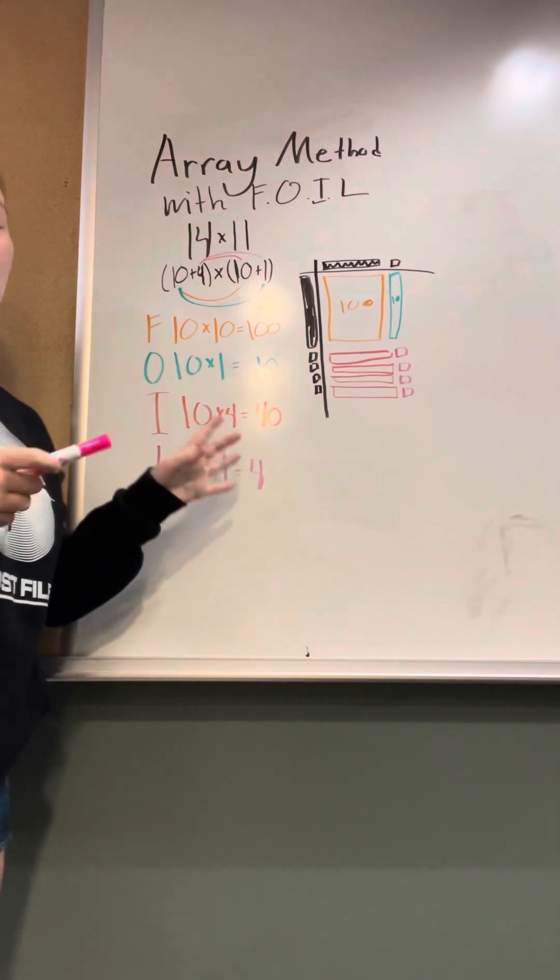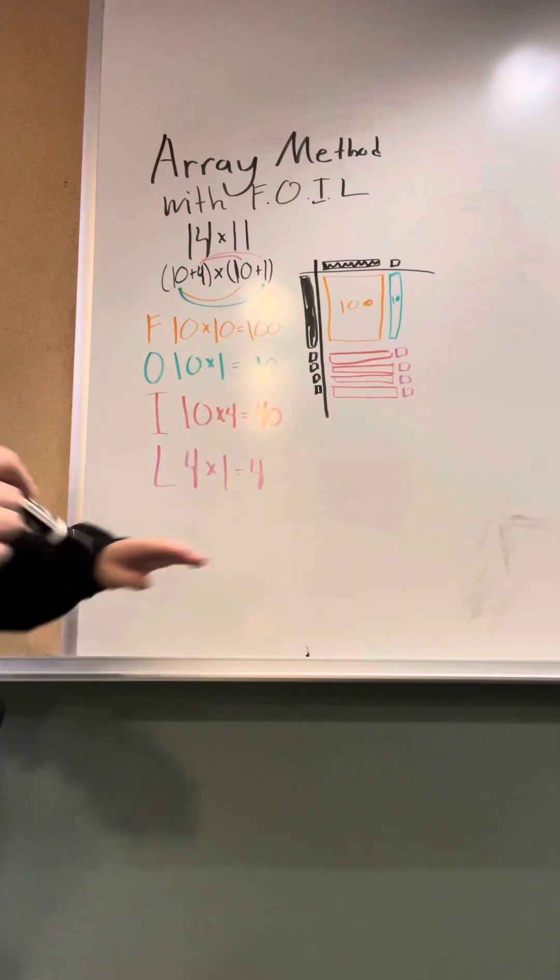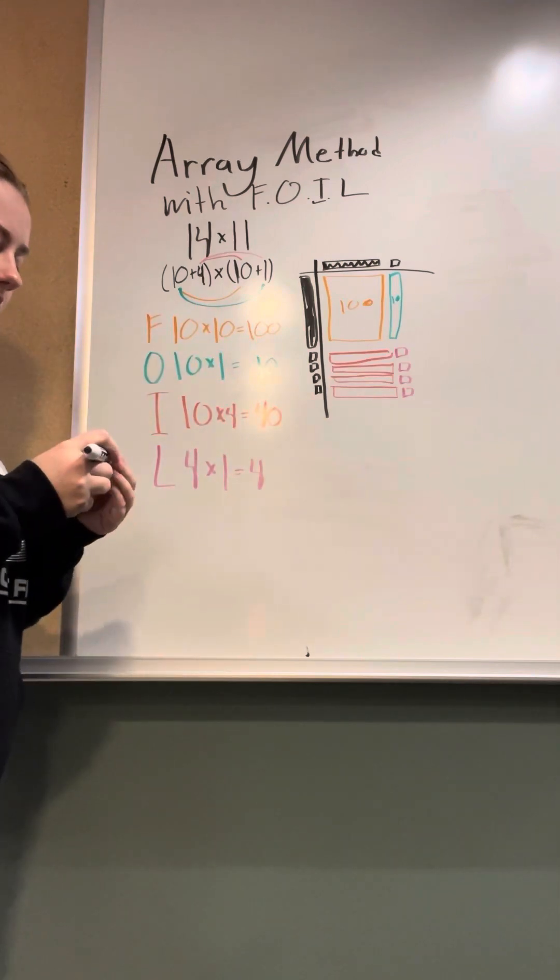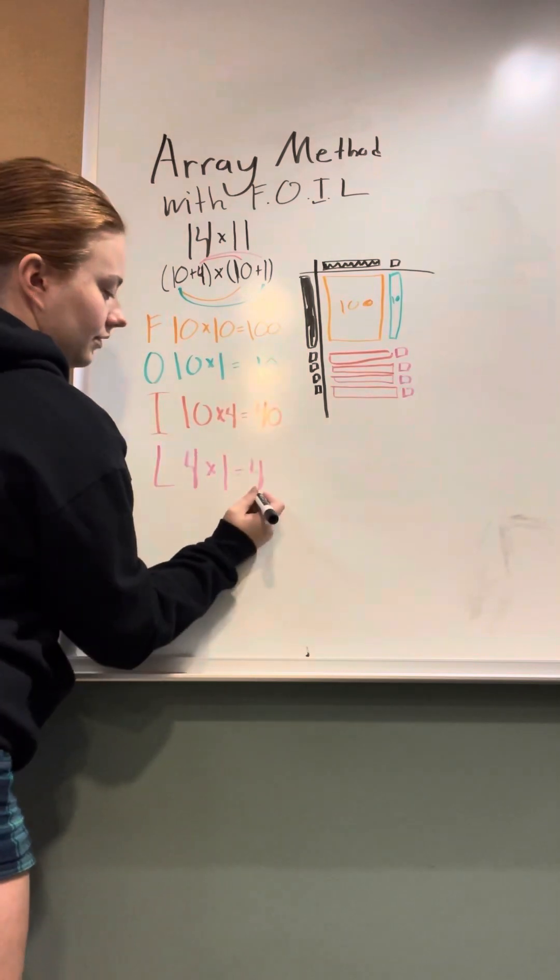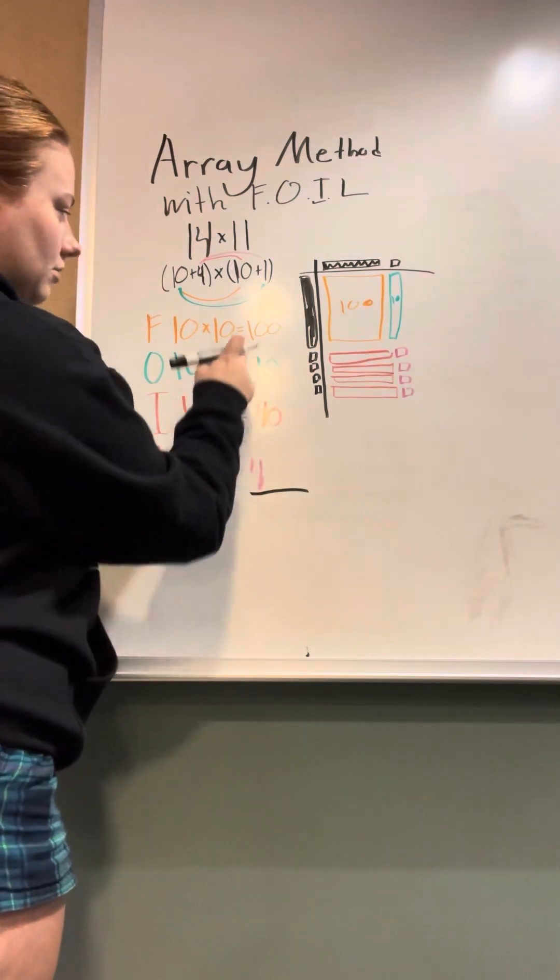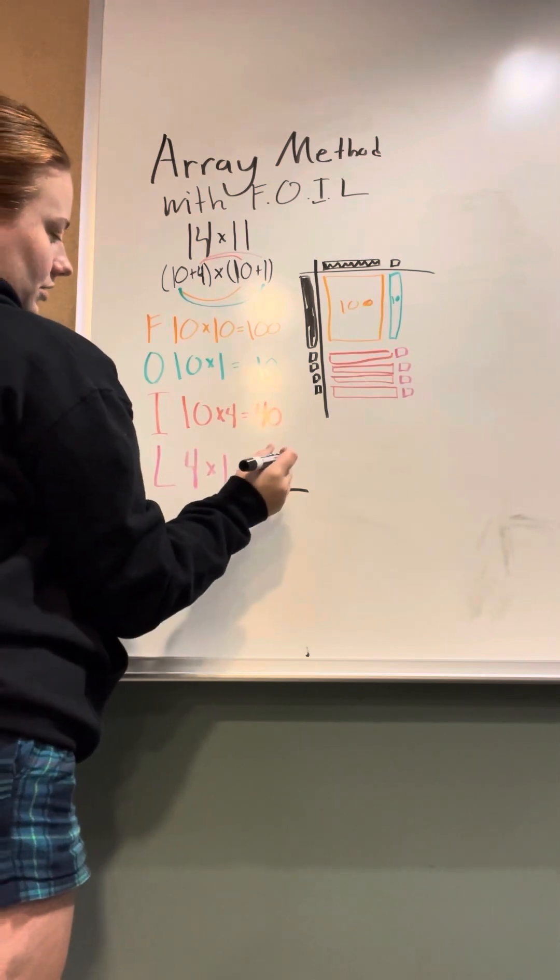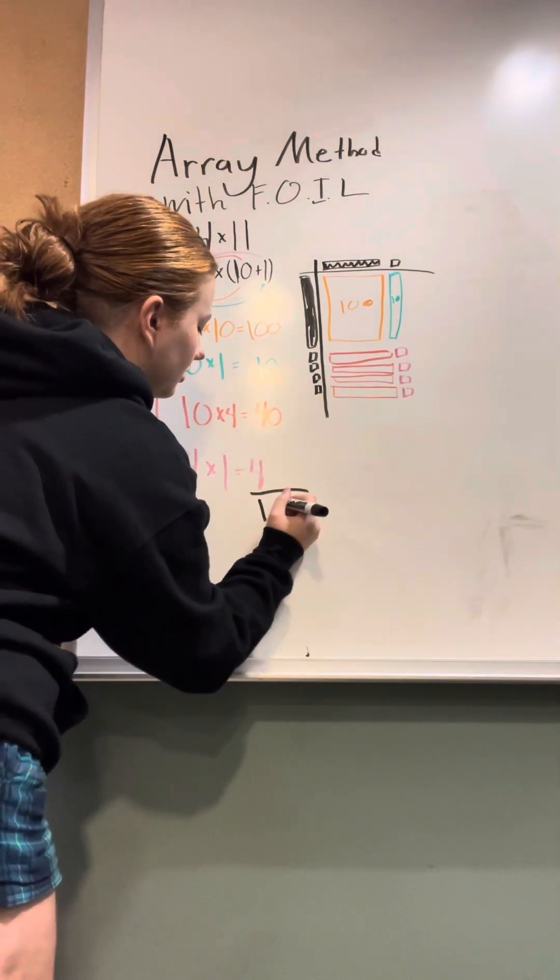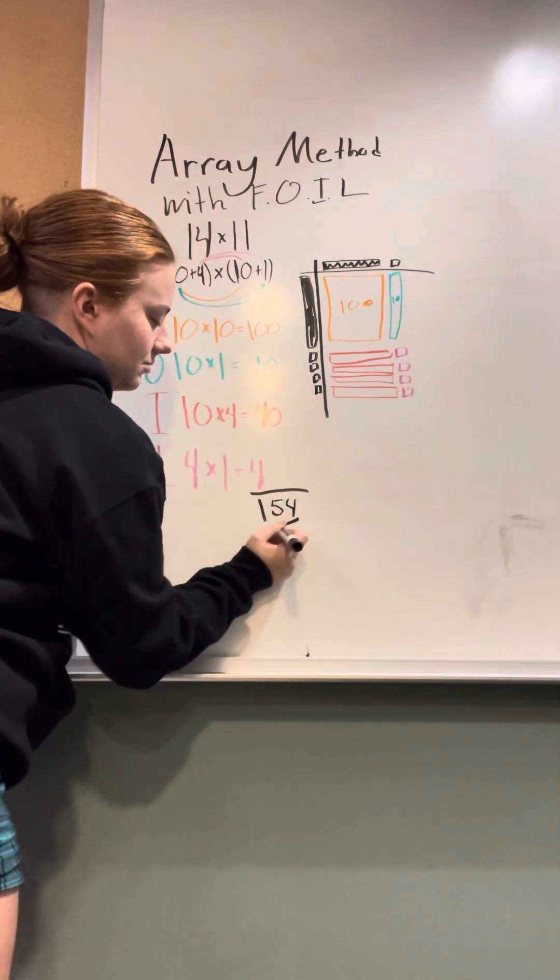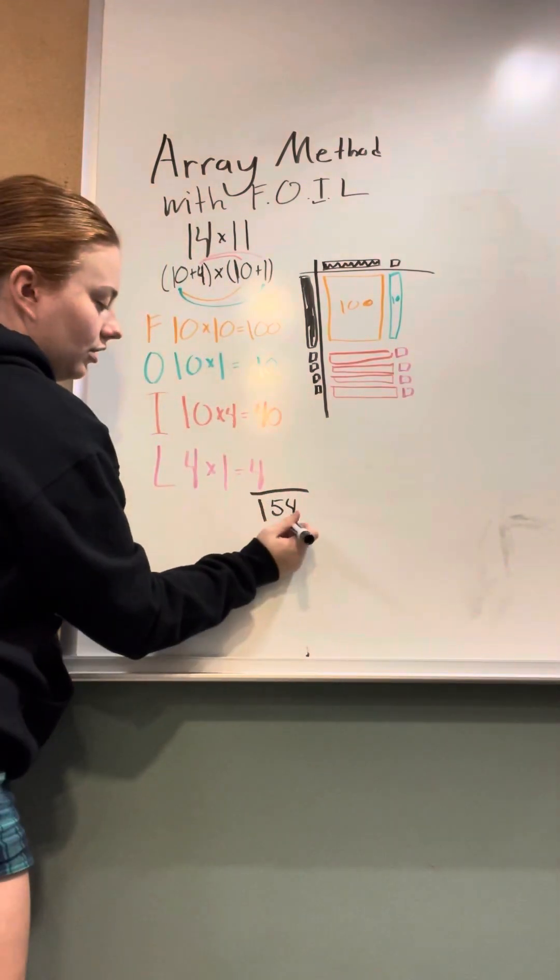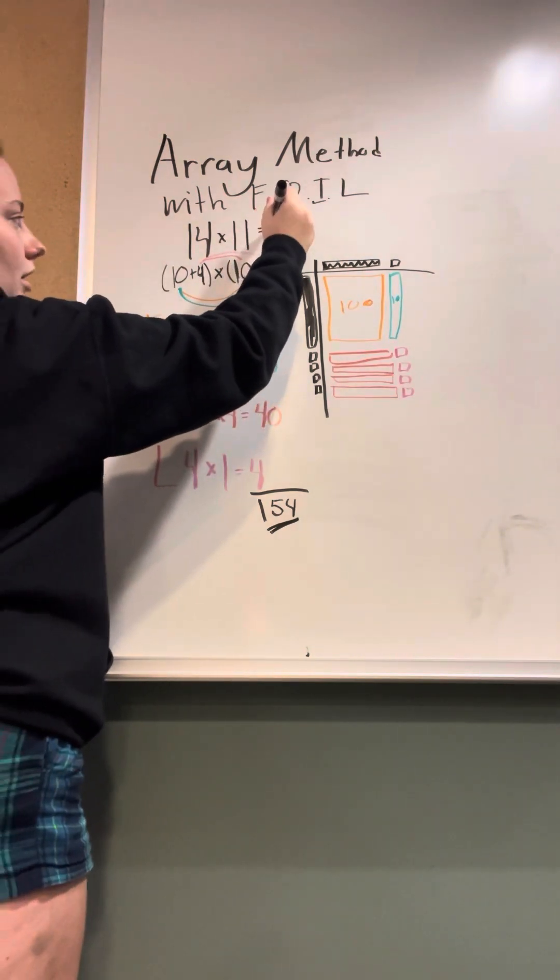So that is how you use the array method to FOIL. And now, to get the answer, what you're going to do is add up these all together. So 100 plus 10 plus 40 plus 4 is going to be 154, which is going to be your final answer to the original problem of 14 times 11.